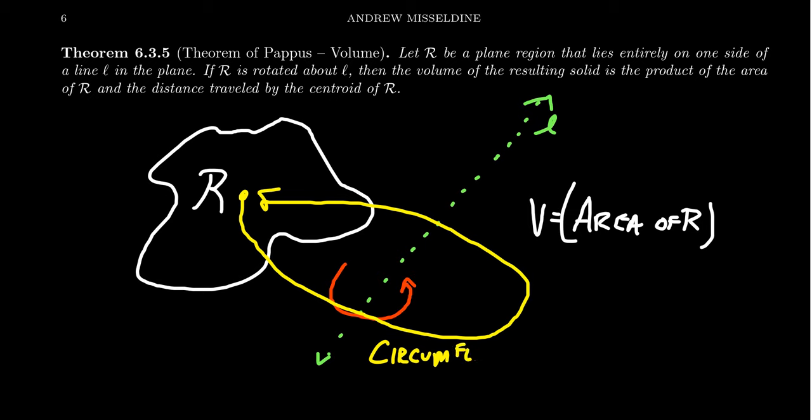Now as this shape gets rotated around the line L, the centroid itself travels some distance. It travels some distance around, right? It goes on this circular path, something like this. And this circular path has a circumference. And so how far did that centroid travel as you rotate it around?